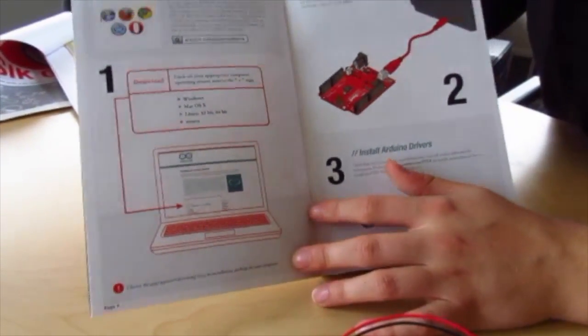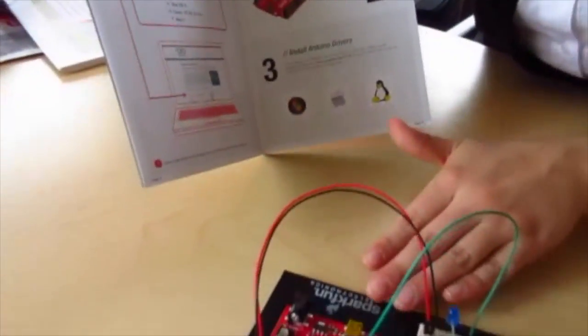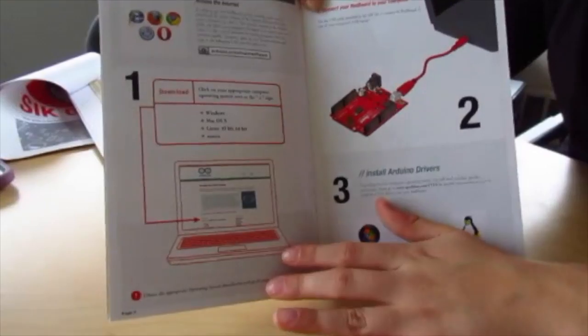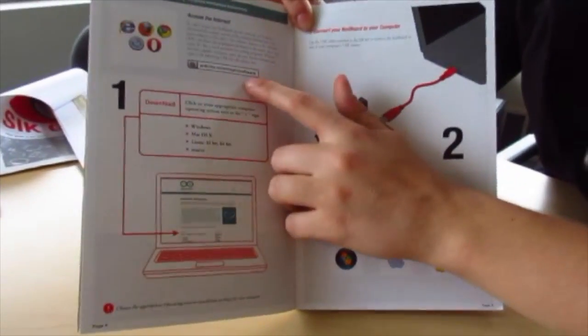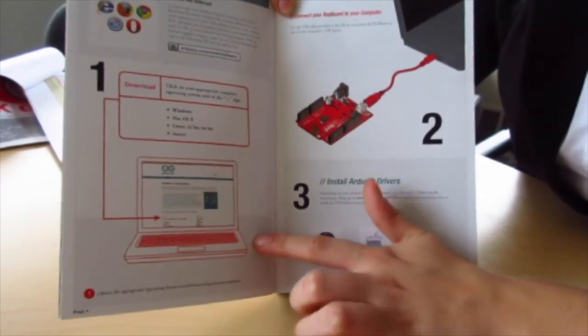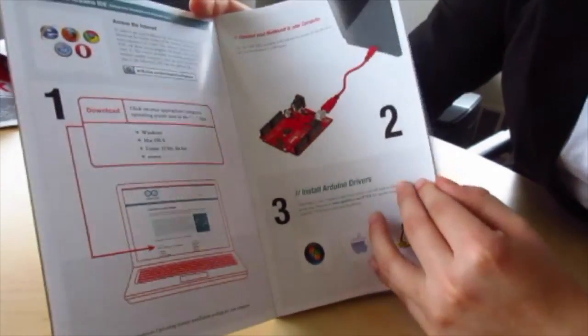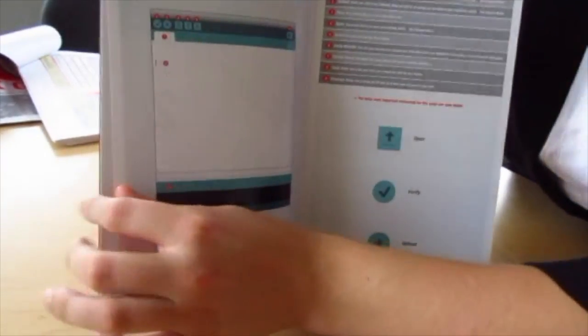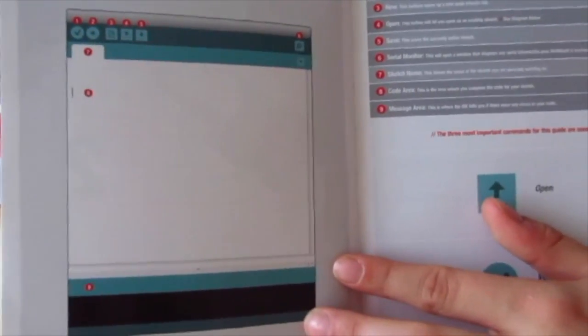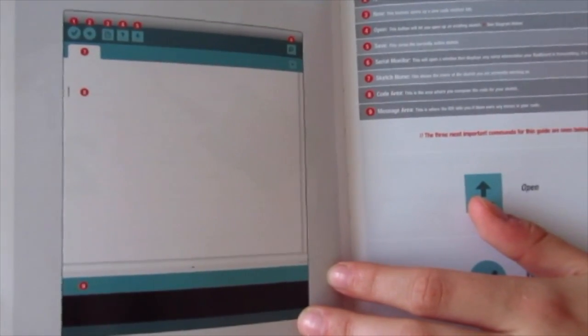Now we're going to look at the computer software portion. To be able to power and run this entire circuit that we've created, you need to have the correct software and the correct program. You need to go online and download the Arduino software and install it on your computer. Once you have everything installed and all of the drivers installed, you can make sure that you open your Arduino software. This is what the open Arduino software looks like. This is where we're going to be writing our code to be able to upload it onto the Arduino to blink the LED.